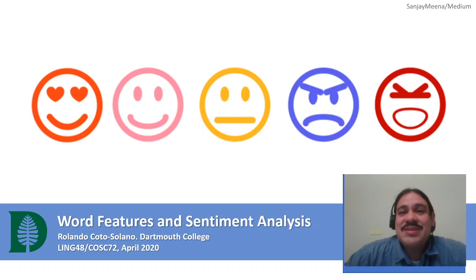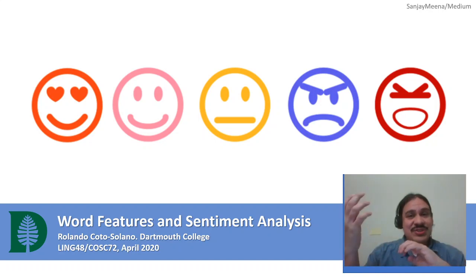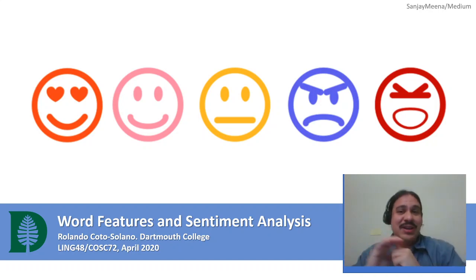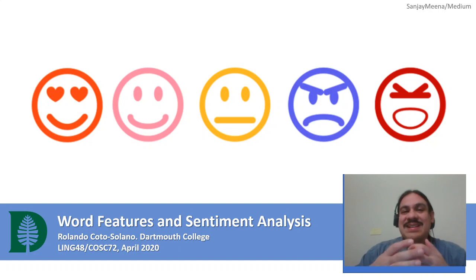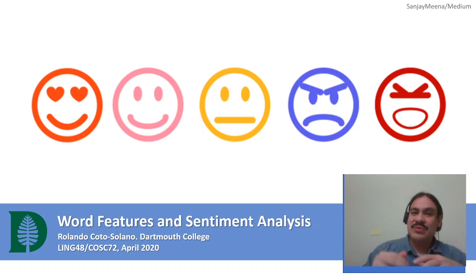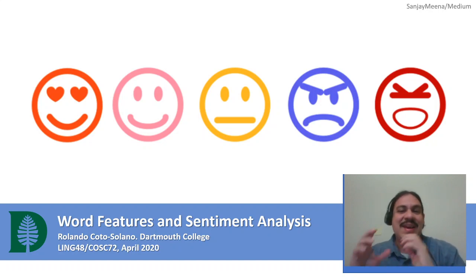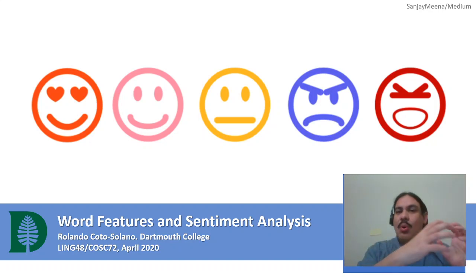Welcome to the third week of Accelerated Computational Linguistics. This week we will start our study of natural language processing. We will turn documents into collections of features so that we can feed these features into machine learning algorithms. In this first video we will start with a very basic application: sentiment analysis. We will convert documents into words, words into features, and then use these features to compute sentiment values for a whole document.